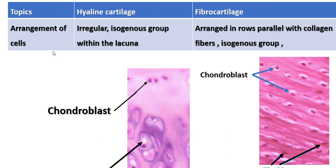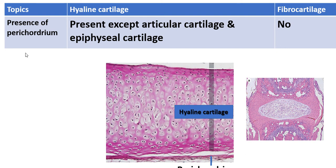Regarding cell arrangement: hyaline cartilage cells are arranged in irregular isogenous groups within lacunae. Fibrocartilage cells are arranged in rows parallel with collagen fibers, also in isogenous groups. You can see the alternating layers — a cartilage cell layer, then a collagen fiber layer, then another cartilage cell layer, then another collagen fiber layer — in a parallel arrangement.